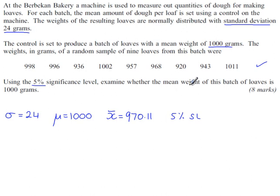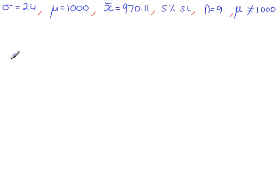And we're testing to see if the mean weight of this batch of loaves is 1000. So it could be less than 1000, it could be more than 1000. So what we're going to test for is the population mean not equal to 1000. H0, the population mean is equal to 1000. H1, the population mean has changed. So not equal to 1000.